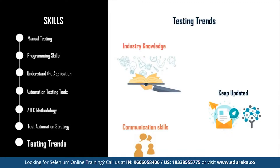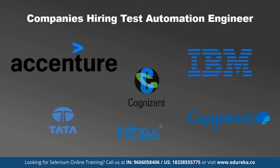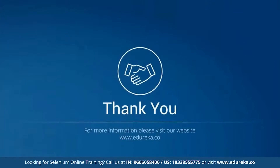Once you have mastered these skills, you are on your way to become a successful software test automation engineer. Some of the top companies hiring test automation engineers are Accenture, IBM, Cognizant, Infosys, TCS, and Capgemini. Keep an eye for opportunities and utilize your skills to grab the offer. That was all about today's session — I hope this will help you prepare and get well versed with all the skills to become a successful test automation engineer. Thank you and happy learning!